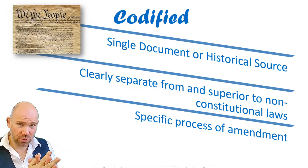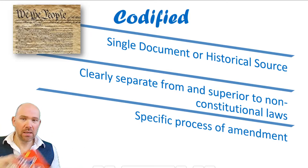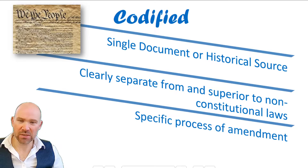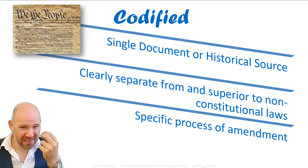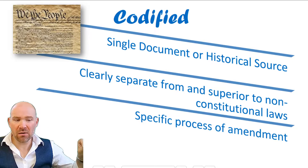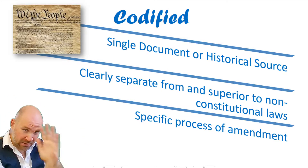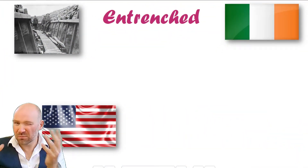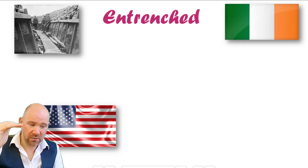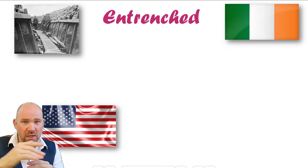Just to clarify something: the British Constitution doesn't exist in a single document, but that doesn't mean it doesn't exist and it doesn't mean it's not written down — it's just not written down in one document. Don't ever write in an essay that the British Constitution is unwritten while the American one is written — that's technically wrong. They're both written. The difference is whether it's a single document from a single historical source, or multiple sources. That's the key distinction.